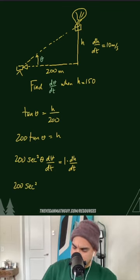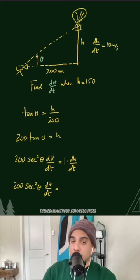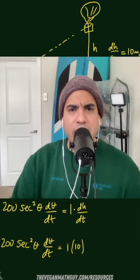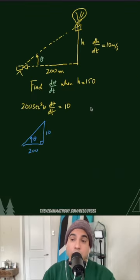We don't know theta, but that's okay. We're trying to find d theta dt, so it's okay that we don't know that, but now we know the height. So what's theta? This is where you have to set up an example triangle to solve for theta.